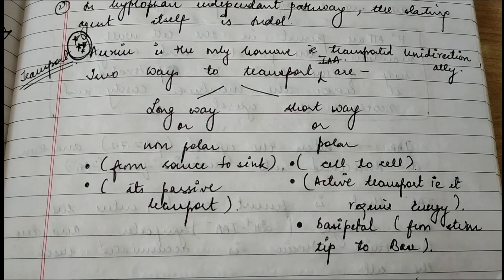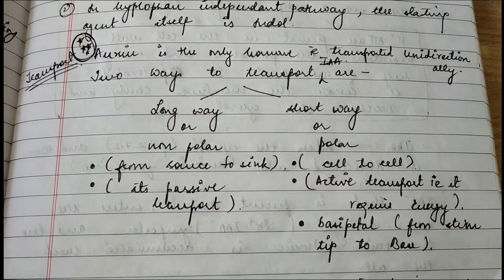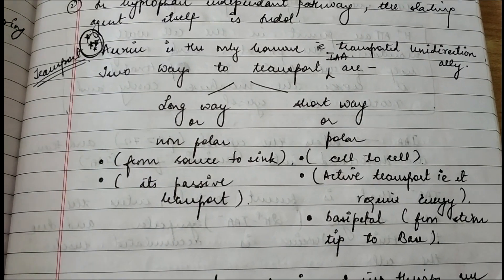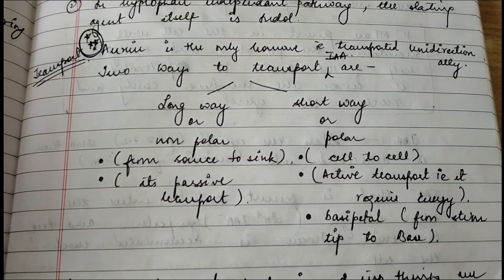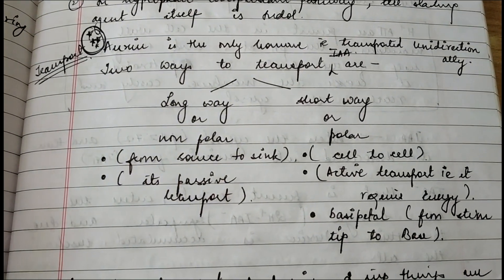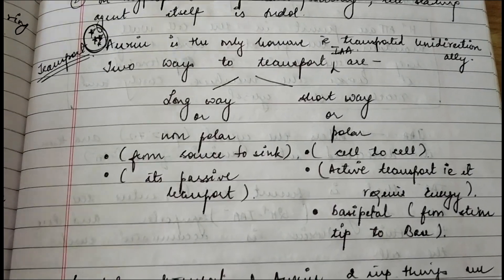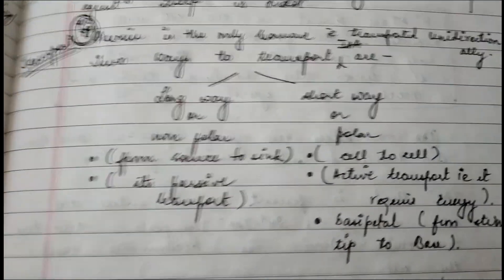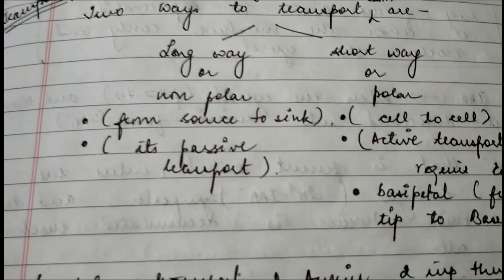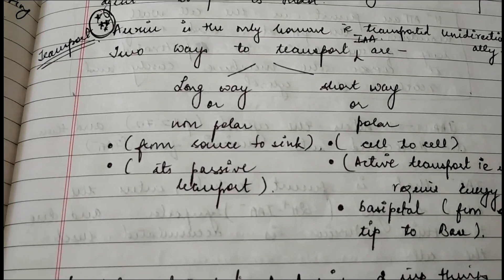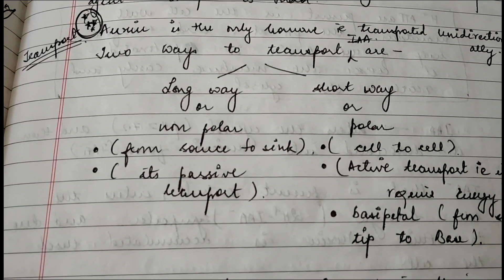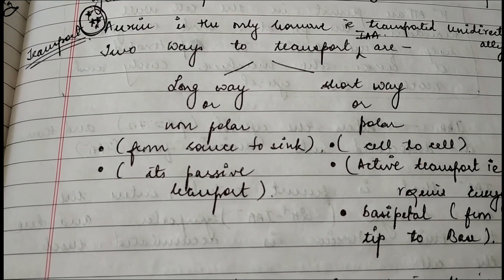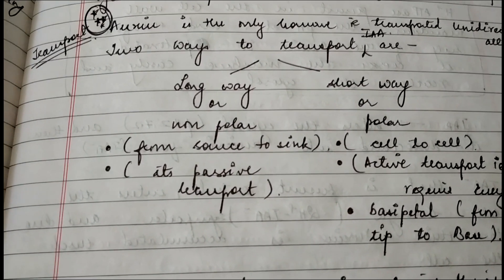Auxin is the only hormone that is transported unidirectionally — this is important to keep in mind. There are two ways to transport indole-3-acetic acid: a long way and a short way. If you have read about phloem unloading and loading processes, you will already know what a long-way pathway and a short-way pathway are.